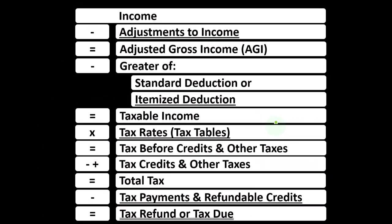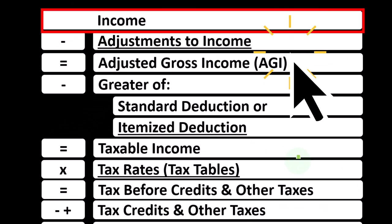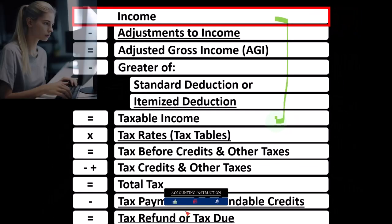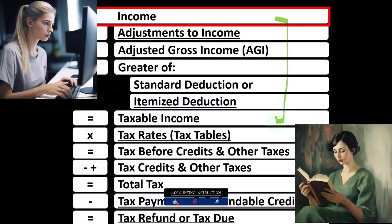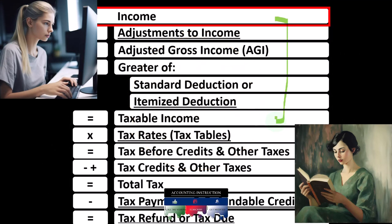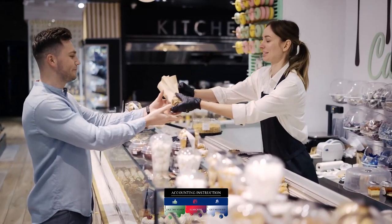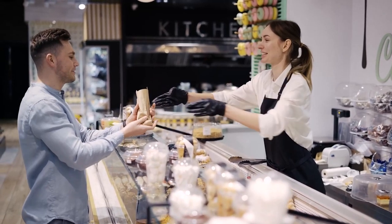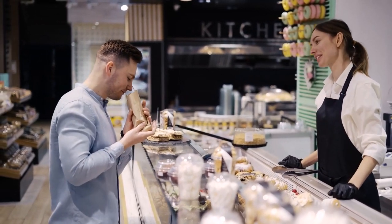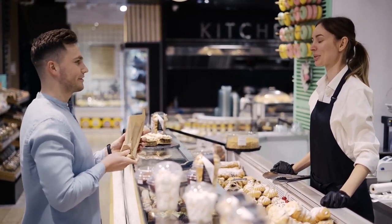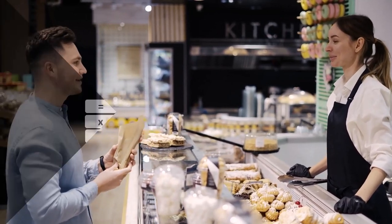Looking at the income tax formula, we're focused on line one, income. The first half of the income tax formula is in essence an income statement, but just an outline, with other forms and schedules flowing into these line items — one of those being the Schedule C. The Schedule C, having business income minus business expenses, gives us the business net income, which flows in from the Schedule C to line one, income of the income tax formula.